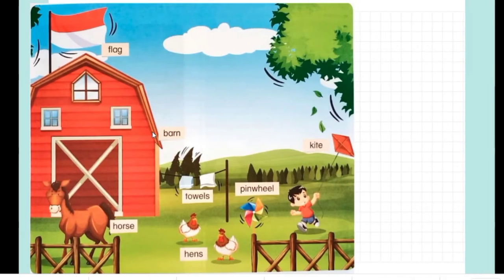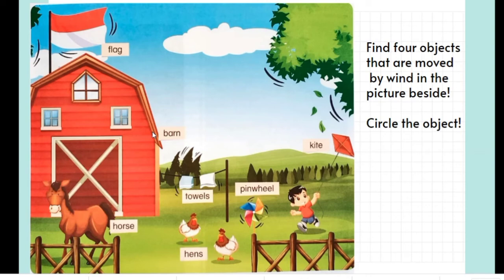All right, so natural forces are wind and water. Now find four objects that are moved by wind in the picture beside. Circle the object. Let's do it together. What do you think? Yes, flag. What else? Yes, kite. Next, towels and pinwheel. Very good, great job.